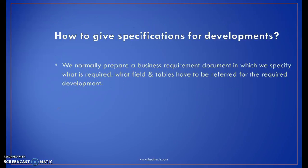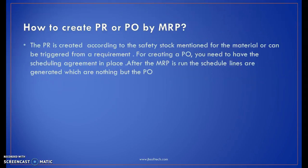How do you give specifications for developments? We normally prepare a business requirement document in which we specify what is required, what fields are required, and what tables need to be referred to for the required developments — this is specifically for implementation projects from the SAP MM perspective. How do you create a purchase requisition or purchase order by MRP? A purchase requisition is created according to the safety stock mentioned for the material or can be triggered from a requirement. For creating a PO, you need to have the scheduling agreement in place; after MRP is run, the scheduled lines are generated, which are the purchase orders.